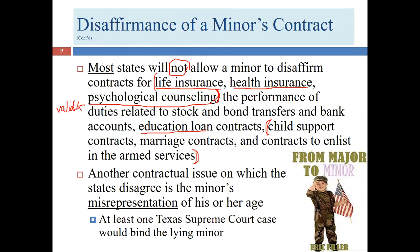Sometimes minors lie about their age — not just at bars but in contract scenarios. Imagine a 17-year-old who wants to sign an apartment lease. The leasing agent doubts he's 18, so the minor claims he is — possibly even showing a fake ID — and the agent, satisfied, lets him sign.